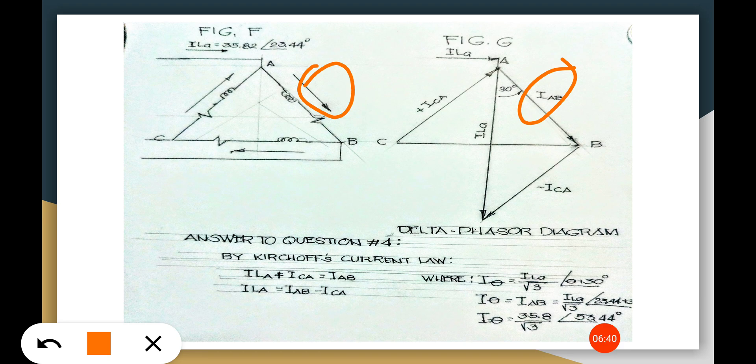By way of the Kirchhoff's current law. This is a node here, get the node, all those currents are going to the node.